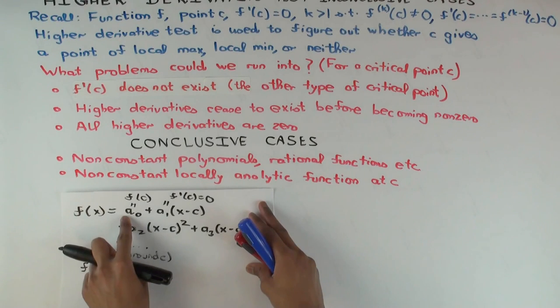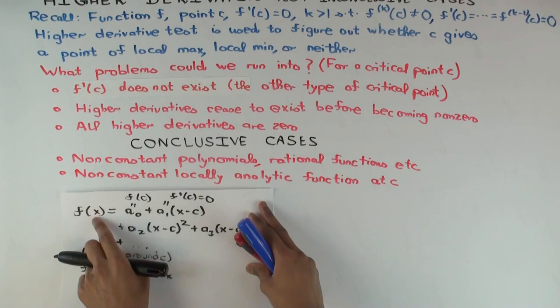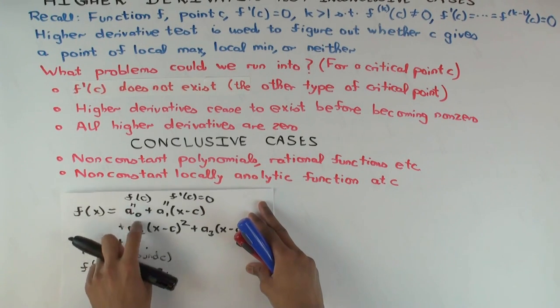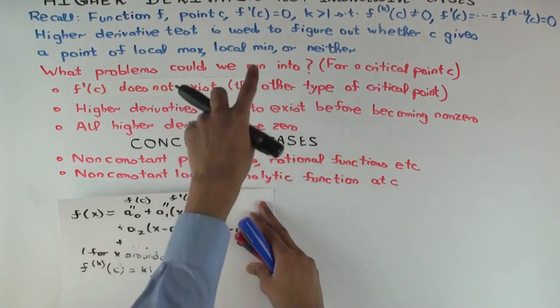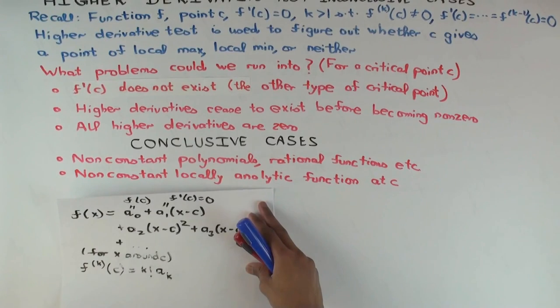Now, A0 is just f of c. Because when you plug in x equals c, you should just get f of c. So the constant term is just f of c. A1 is just f prime of c, which we are assuming is 0 in our setup. Because we are doing everything at a critical point.